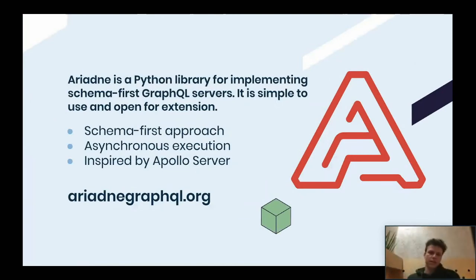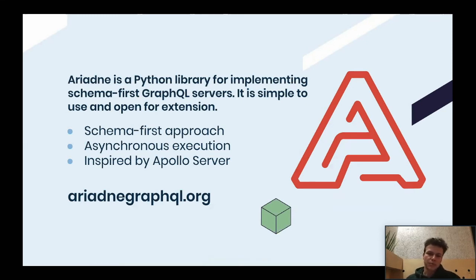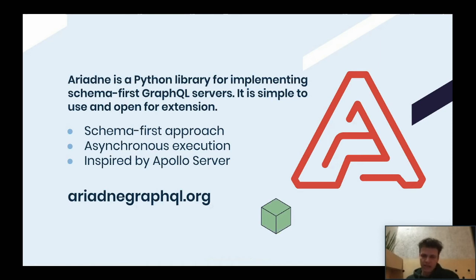The last thing I want to show is Ariadne — our own GraphQL server, inspired by Apollo Server. It is a schema-first framework with async features plus subscriptions. It's still early days, and there is only very basic integration with Django — adding deeper support is on our roadmap. But you can already use it to build federations, which we do as well. It's a really cool framework and we want to invest a lot of time in it.